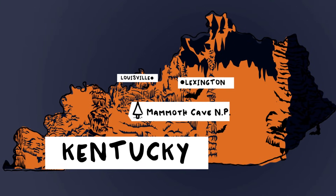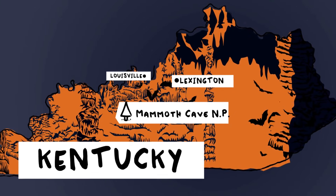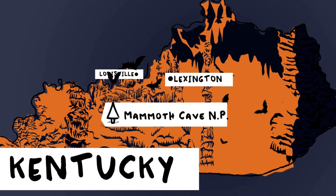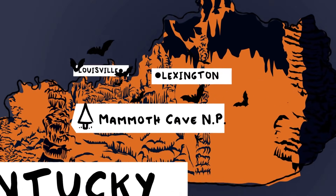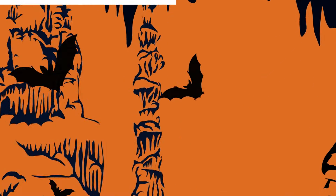Mammoth Cave in Kentucky is a national park. It's the longest cave on Earth — over 400 miles through the rock.